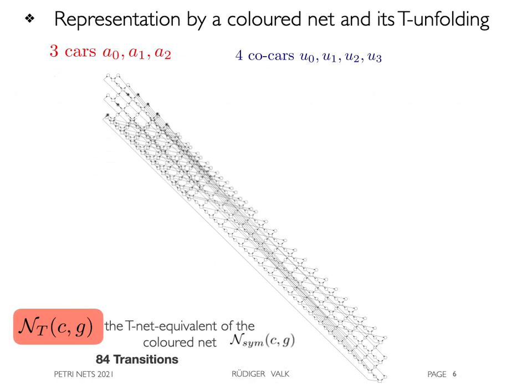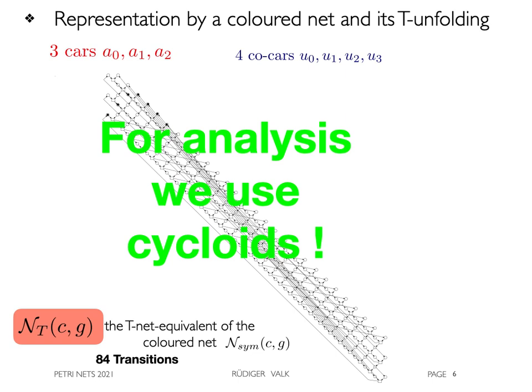The entire T-net has 84 transitions and is quite complex in the general case. Fortunately, we could prove that it is isomorphic to a particular type of cycloid for which a theoretical basis has been developed.